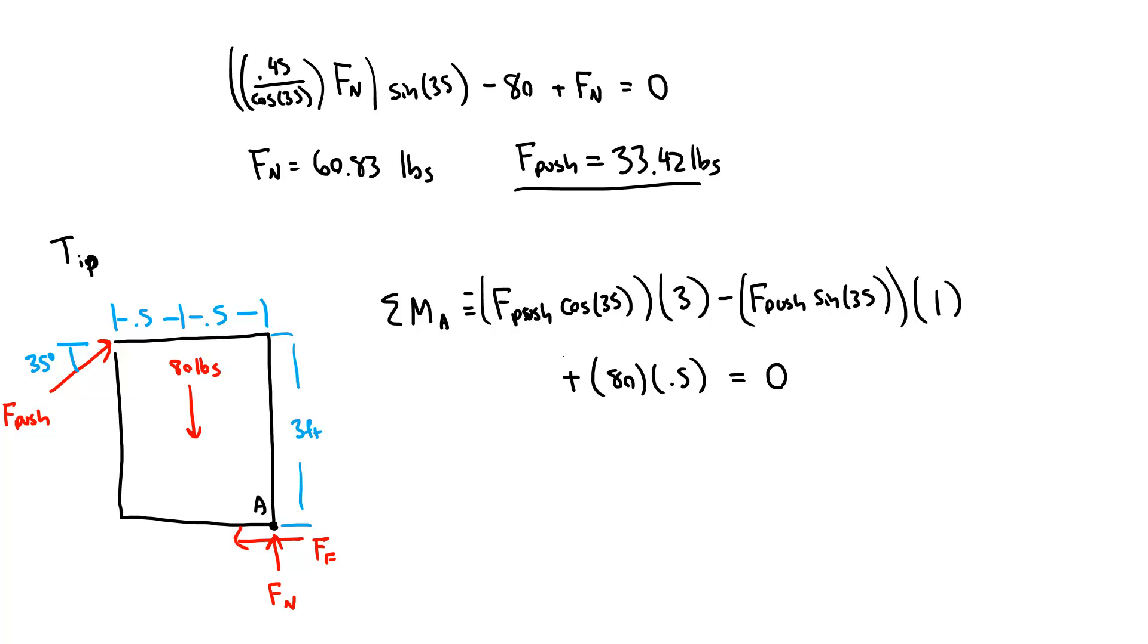So if I were to go about solving this, F_push is the only variable in there. I would find F_push in this case is going to be equal to 13.2 pounds. So doing some comparison, we see it would take 13.2 pounds to tip this body over, 33.42 pounds to slide the body.